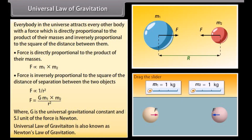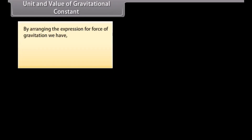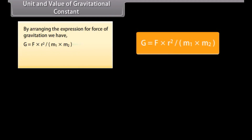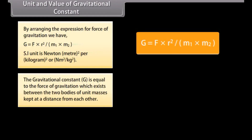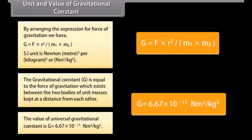This is also known as Newton's law of gravitation. The unit and value of gravitational constant: by rearranging the expression for force of gravitation, G is equal to F times R squared divided by M1 times M2. The SI unit is Newton m² per kg². The gravitational constant G equals the force of gravitation existing between two bodies of unit masses kept at a unit distance from each other. The value of universal gravitational constant G is equal to 6.67 × 10⁻¹¹ N m² per kg².